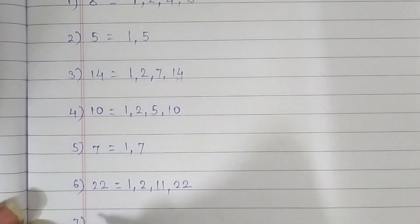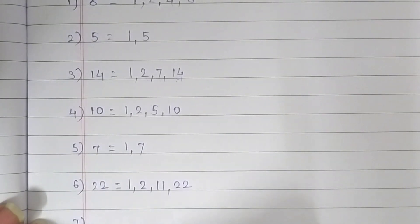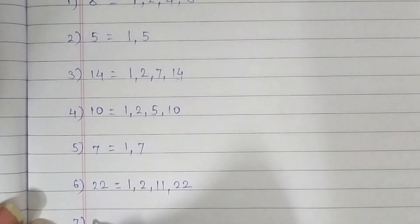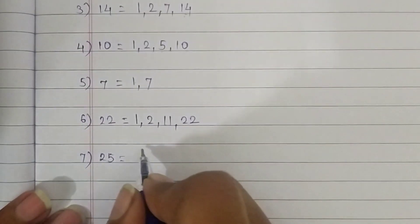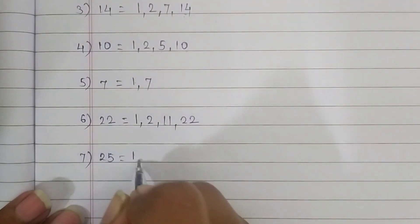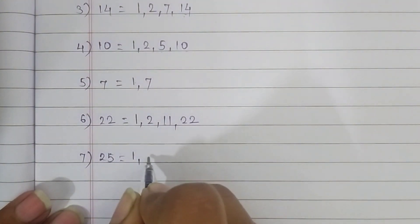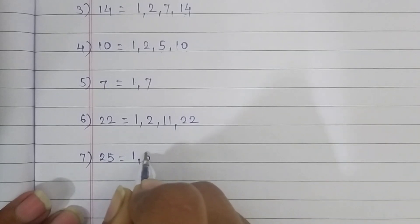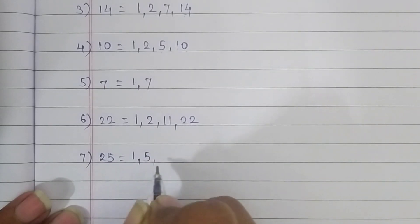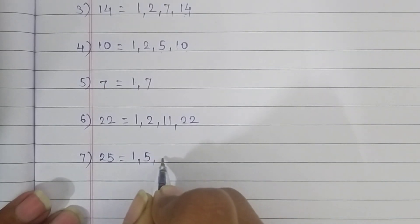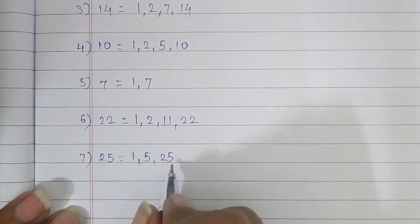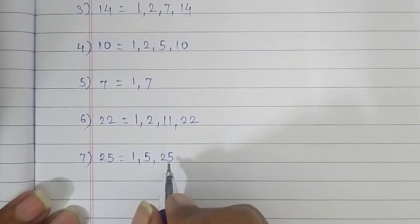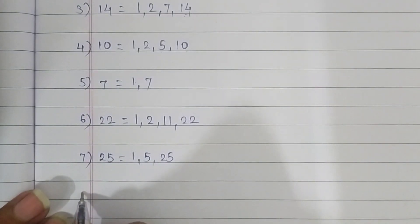Our 7th question is 25. The first factor of 25 is 1, the second factor is 5, and the third factor is 25. It comes in only 3 tables.